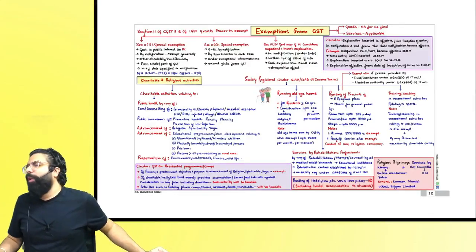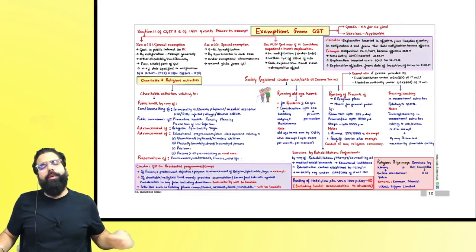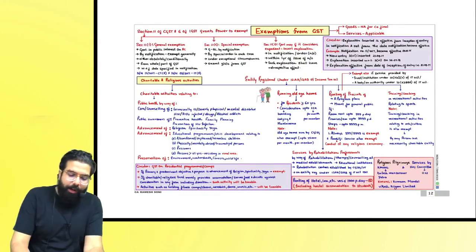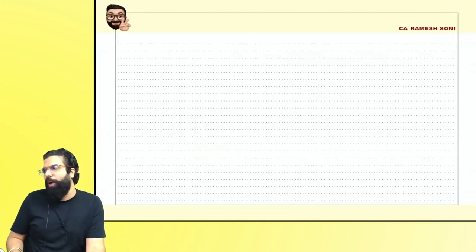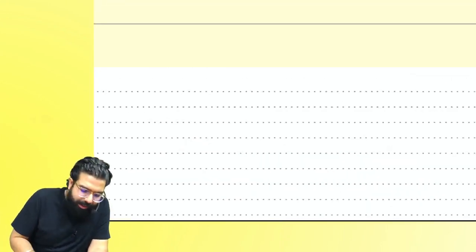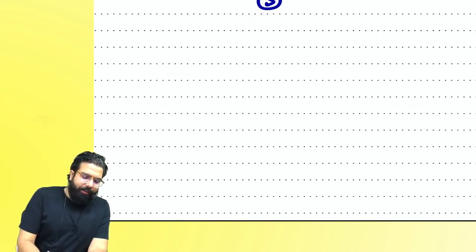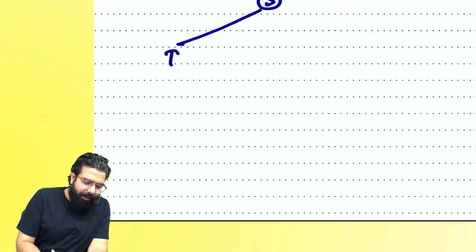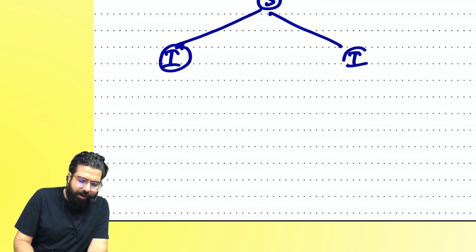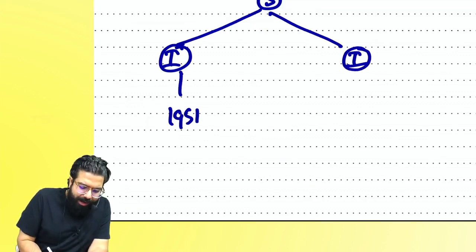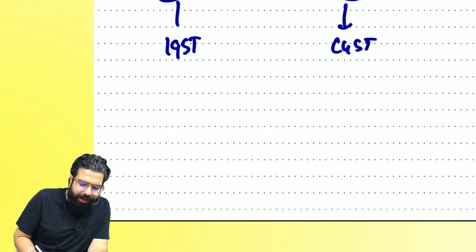The next chapter we are going to revise is the chapter of exemption. Let's take a quick linking. We started learning GST with goods and services. Goods and services have to be supplied. Supply can be either interstate supply or intrastate supply. For interstate supply, IGST will be levied. For intrastate supply, CGST will be levied.